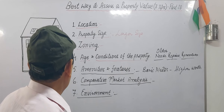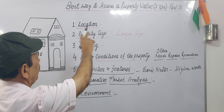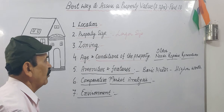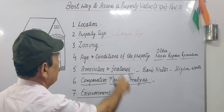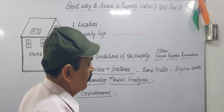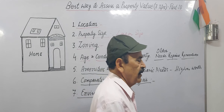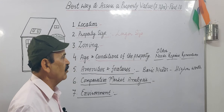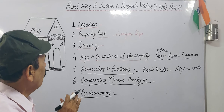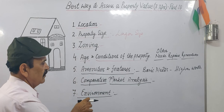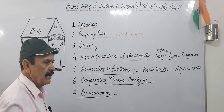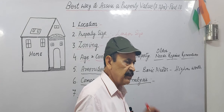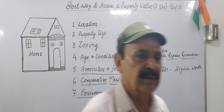So these seven factors are very important — the best way to assess a property value. Whenever you go to buy any property, whether for residential or commercial purpose, keep these seven factors in mind. Only then will you be able to get a good property that gives you appreciation and income. Jai Hind!